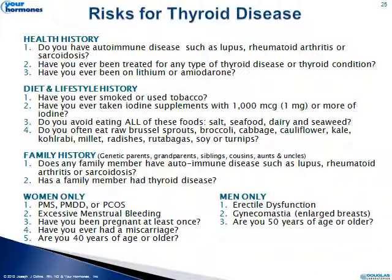Family history is important — whether genetic parents, grandparents, siblings, cousins, aunts, or uncles have had autoimmune or thyroid disease increases the patient's risk. For women, there's an association with increased risk for thyroid disease and those who have PMS, PMDD, and PCOS — especially PCOS, with quite a bit of literature on that correlation. Excessive menstrual bleeding may be a sign of hypothyroidism. Every pregnancy and miscarriage increases likelihood of thyroid dysfunction. As a woman reaches 40 years of age or older, likelihood of developing thyroid disease can increase. For men, erectile dysfunction or gynecomastia and age over 50 are associated with higher thyroid disease risk.